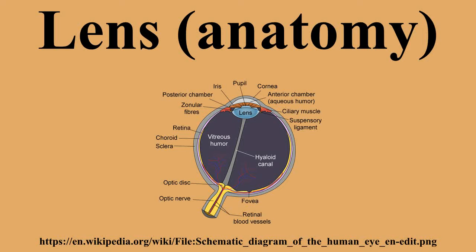The lens is part of the anterior segment of the eye. Anterior to the lens is the iris, which regulates the amount of light entering into the eye. The lens is suspended in place by the suspensory ligament of the lens, a ring of fibrous tissue which attaches to the lens at its equator and connects it to the ciliary body. Posterior to the lens is the vitreous body, which along with the aqueous humor on the anterior surface, bathes the lens. The lens has an ellipsoid, biconvex shape.